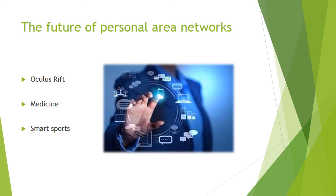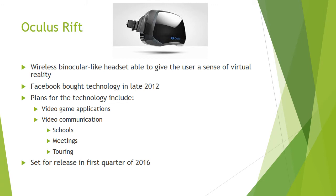Looking into the future of personal area networks, here are three common things we found: the Oculus Rift, applications in medicine, and personal area networks being integrated into sports. The Oculus Rift is a wireless binocular-like headset able to give the user a sense of virtual reality. Facebook bought the technology in late 2012. Plans for its use include video games, video communication for schools, meetings, business applications, and touring. Its release was set for the first quarter of 2016.